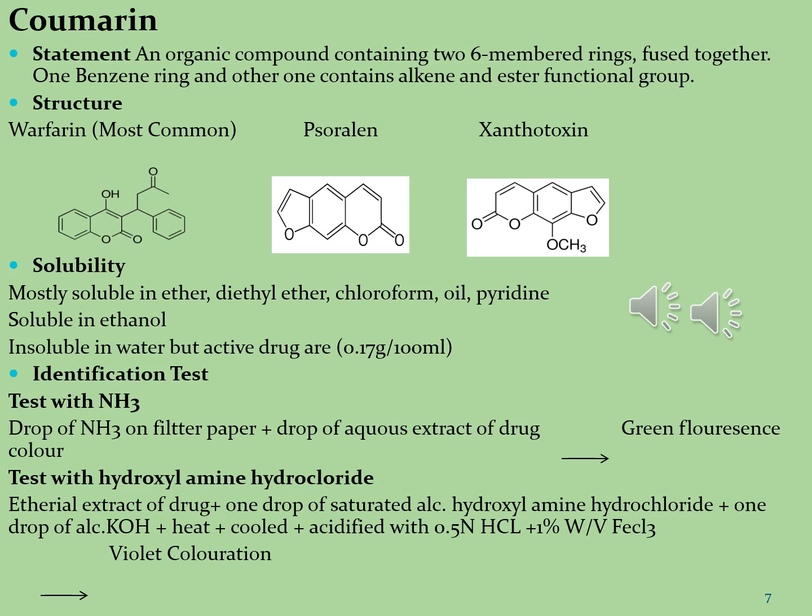Now we see the identification tests for coumarin molecules. The first test is the ammonia test: two to three drops of ammonia are placed on filter paper and a few drops of aqueous extract of drug are added — it changes to green fluorescence, indicating the presence of coumarins. The second test uses hydroxylamine hydrochloride: ethereal extract of drug is taken, one drop of saturated alcoholic hydroxylamine hydrochloride and one drop of alcoholic potassium hydroxide are added, then heated, cooled, acidified with 0.5 N hydrochloric acid, and one percent ferric chloride is added — the result is violet coloration, indicating the presence of coumarins.